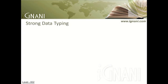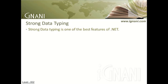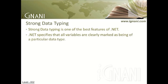Strong Data Typing: Arguably, strong data typing is one of the best features of .NET. Unlike languages like Visual Basic 6, or scripting languages which use variant data types, .NET specifies that all variables are clearly marked as being of a particular data type. It does not support code that results in ambiguous data types. Though some languages compatible with .NET, such as Visual Basic 2010, can still allow some loosely typed data types.